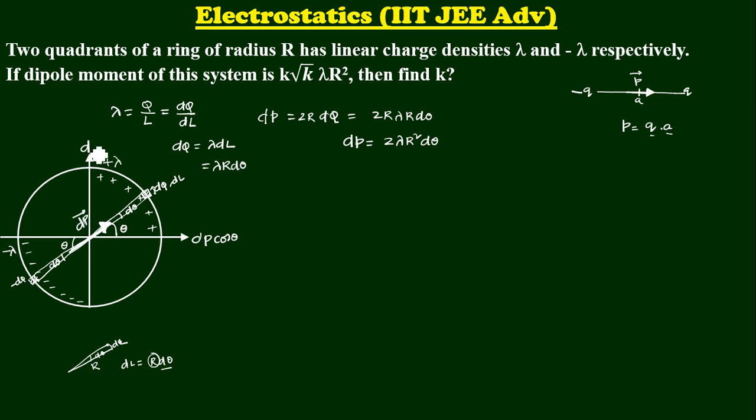Now, this component, y component is going to be dP sin theta. Now, x component dPx is nothing but dP cos theta. If I integrate all these x components, I will get a total dipole moment along x-axis. Now, what is that? Let us see. What is dP? 2 lambda R square cos theta D theta.